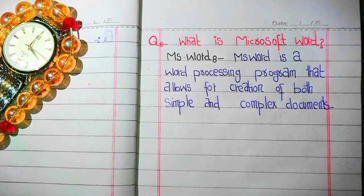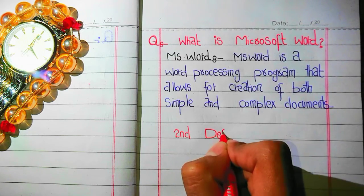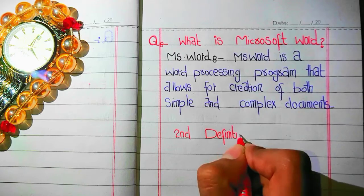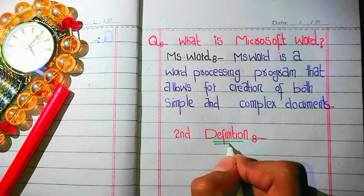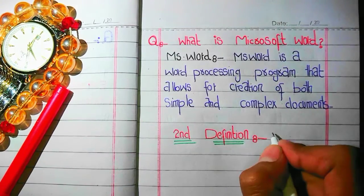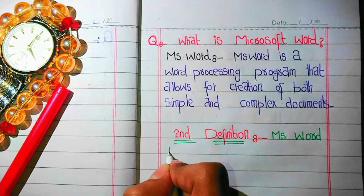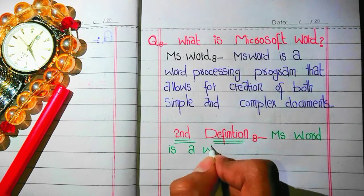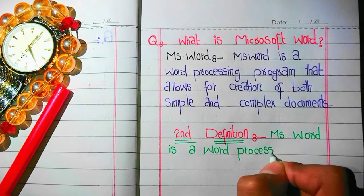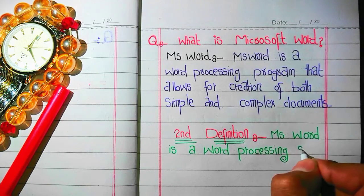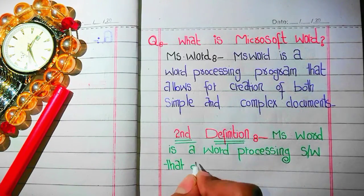Now we define the second definition of MS Word. MS Word is a word processing software that allows users to create and edit text documents.